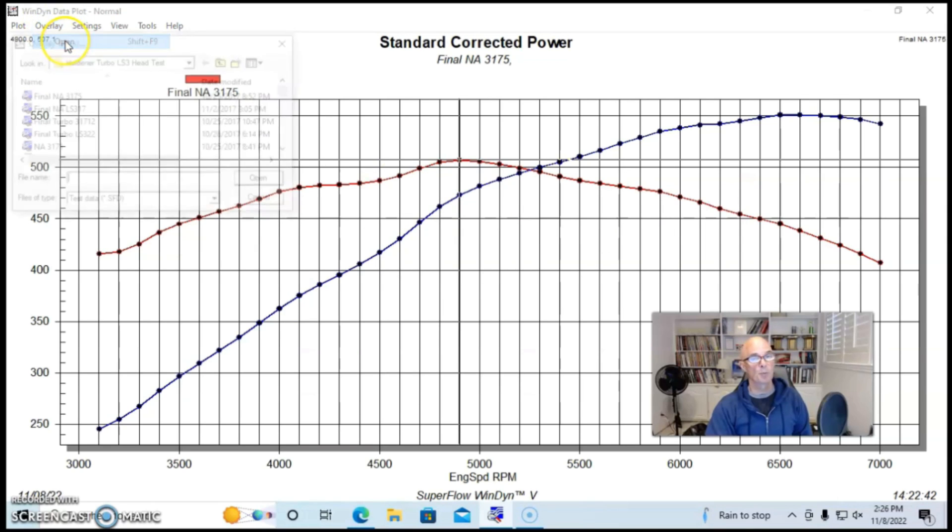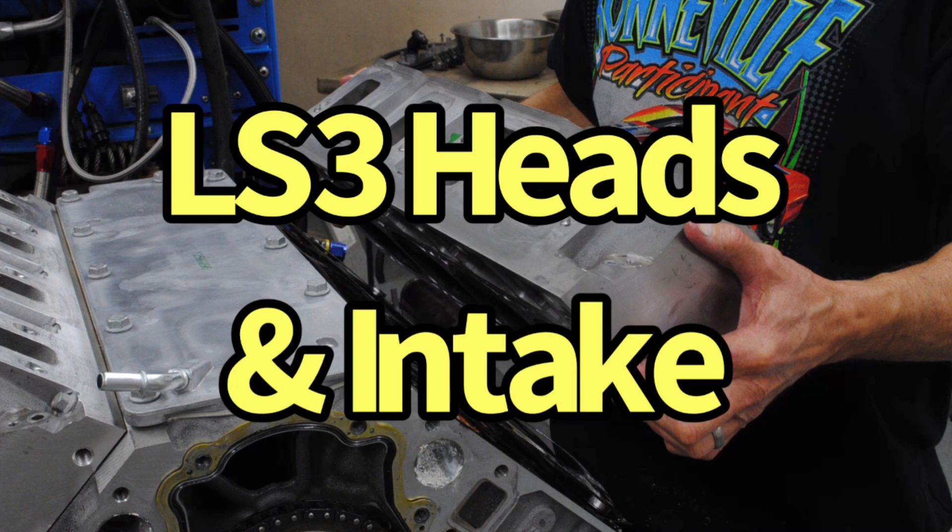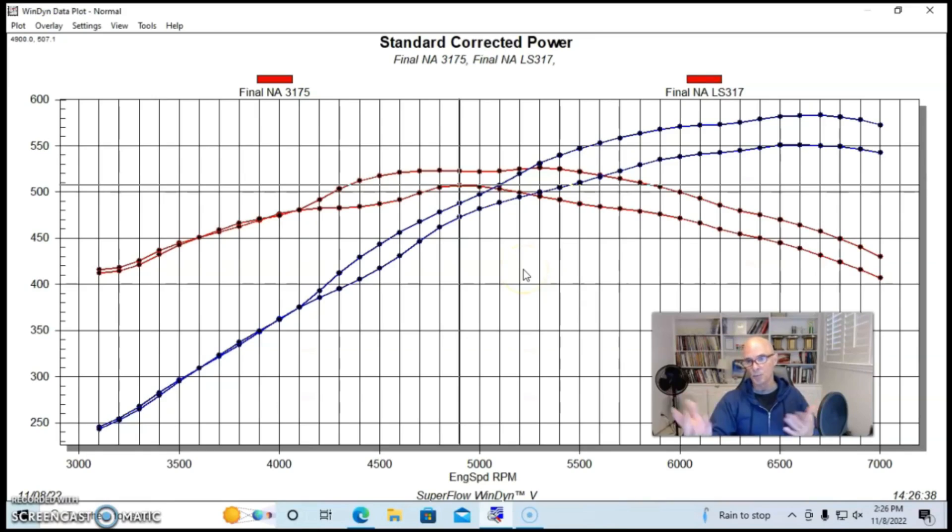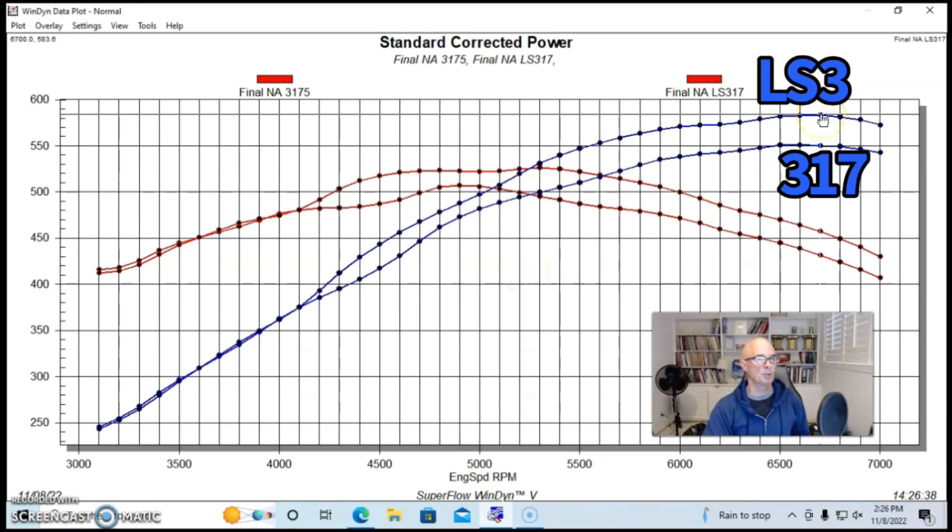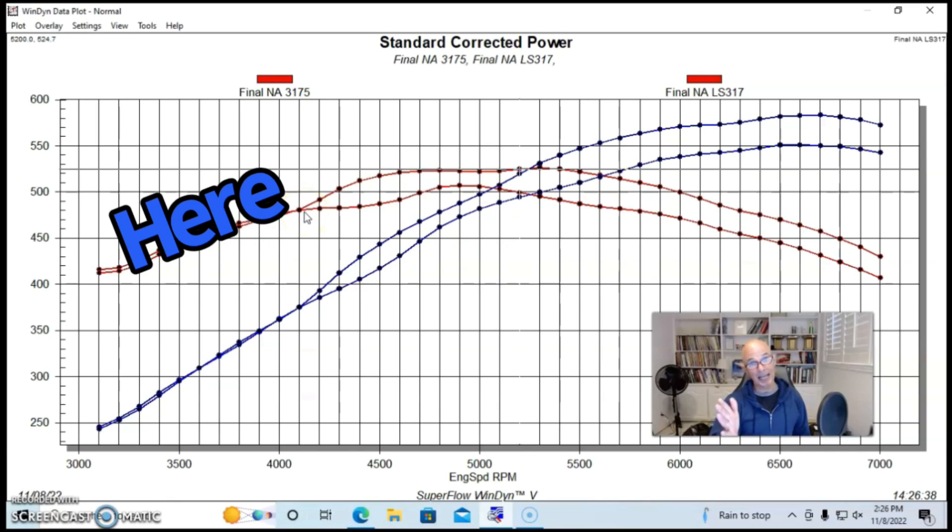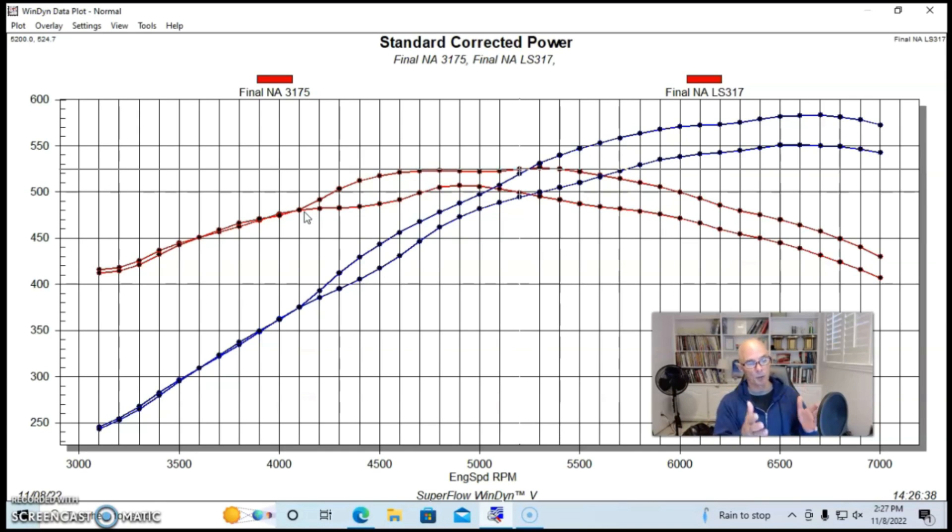Here's what happened when we replaced the 317 heads and the fast intake manifold with LS3 heads. You can see it made more, much more peak power. Peak power was all the way up to 584 horsepower. Peak torque checked in at 525 foot pounds. It made about the same power down low from 4100 and lower as the 317 heads. Please note the 317 heads and the rec port heads have about the same chamber size within one or two cc's of each other.